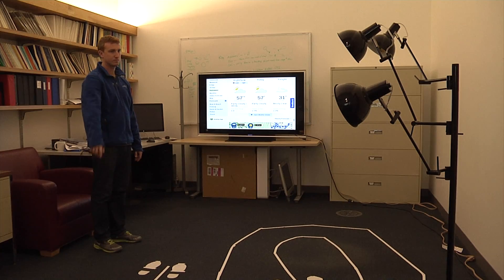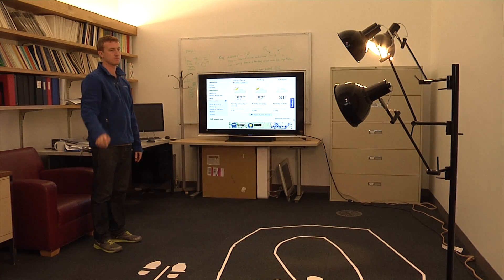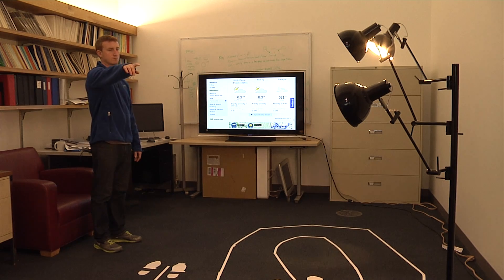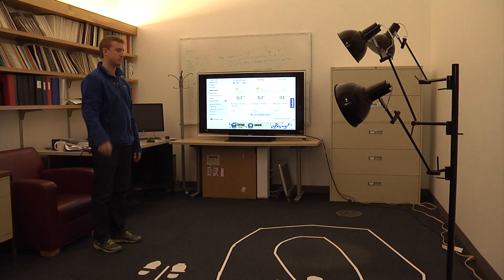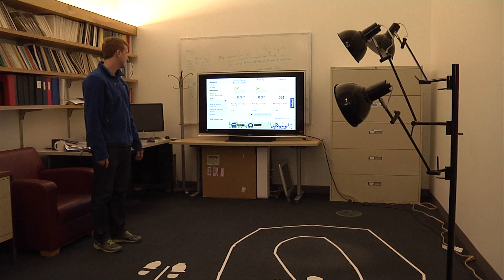The system not only tracks the location of a person, but can also track his body parts. In this example, the person is controlling different household appliances, turning them on and off by simply pointing his hand in their direction.